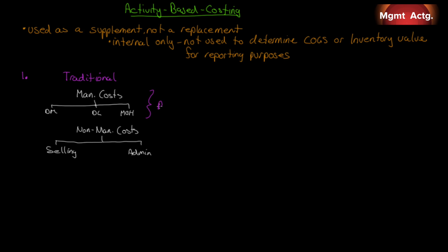And we've been keeping those separate. So when we determine our cost of goods manufactured, our cost of goods sold, all of those things, the value of our inventory, we're really only focused on the manufacturing costs, the non-manufacturing costs, the period costs we just ignore.